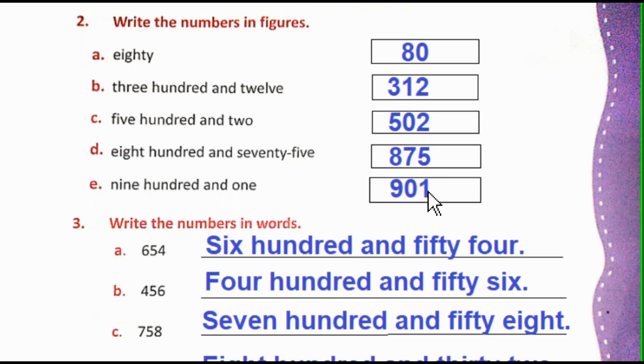E: nine hundred and one, 901. In this one, 901, there are 900s. So you place 9 on the hundred value, 1 on the unit value, and there are 0 tens, no tens. So 0 on the ten value.